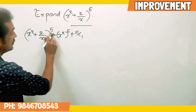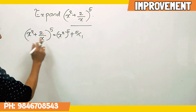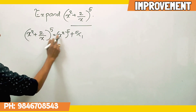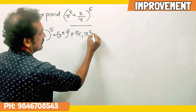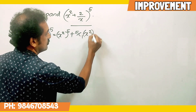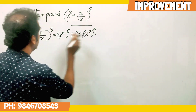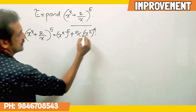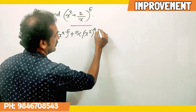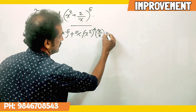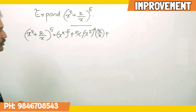The second term: 5C1, x squared raise to 4, into 2 by x. This is the second term.